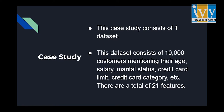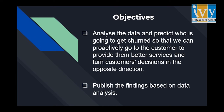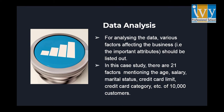Moving on to the objectives — the main reason behind this analysis is to find out a pattern or a reason behind customers leaving the credit card services. What is driving their decision is what we need to look at. And can we find it by looking at the different attributes? The answer is yes. We need to find the pattern and let the bank know what they need to do in order to minimize the risk of attrition, which we'll see in the upcoming slides.